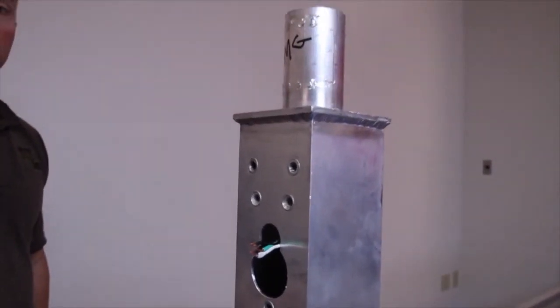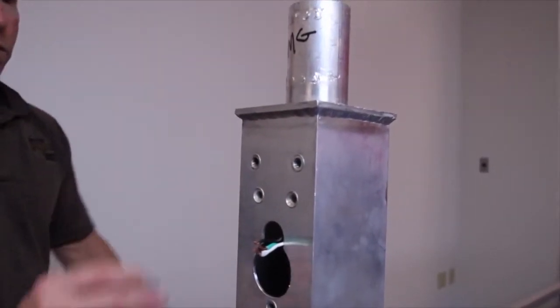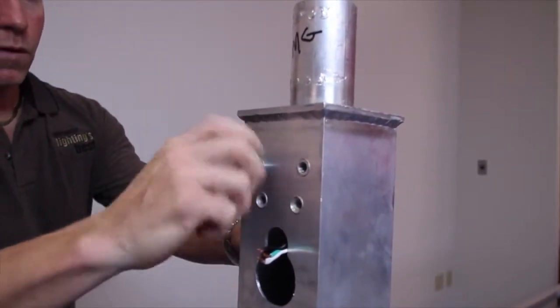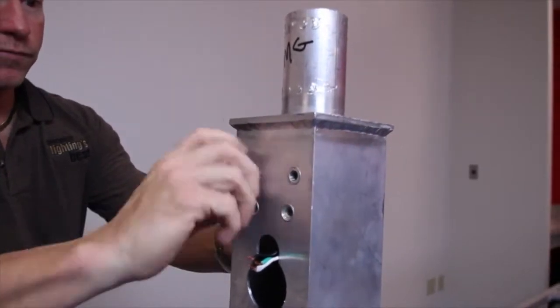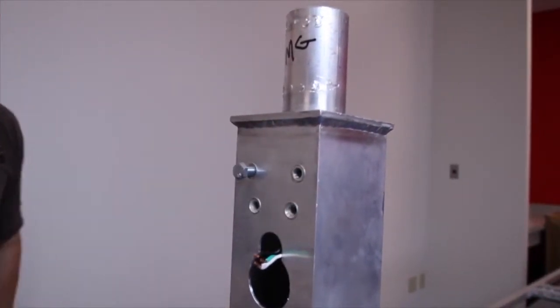When installing a Mongoose with an architectural mount, start by inserting one mounting bolt into the top left hole on the pole the luminaire will be mounted to. Make sure you have proper thread engagement.